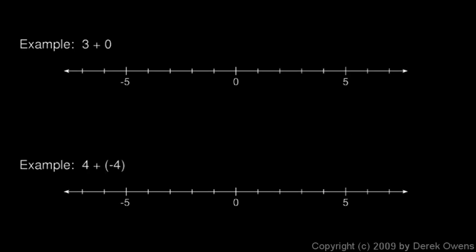Look at this next example: three plus zero. Adding a zero corresponds to no movement. So we start with three, meaning we start at zero and go three to the right — that puts us at three. Then plus zero means we don't go anywhere; we don't go right or left. So we just stop there, and that's our answer: three. Three plus zero is three. If you know anything about addition you know that's the case, but what you're getting now is this visual image.